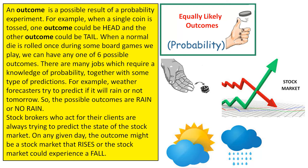For example, when a single coin is tossed, one outcome could be heads and the other outcome could be tails.